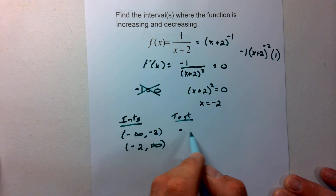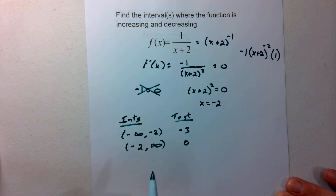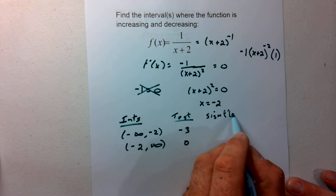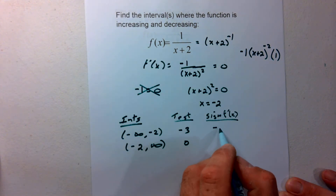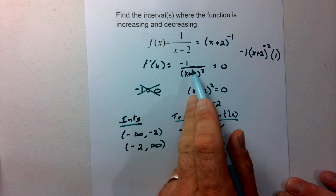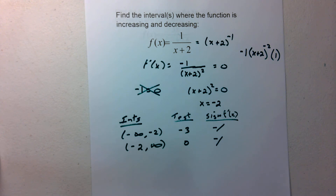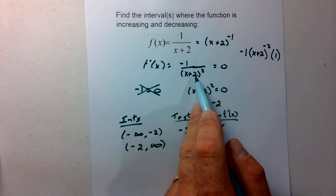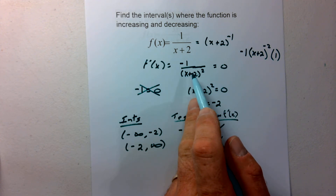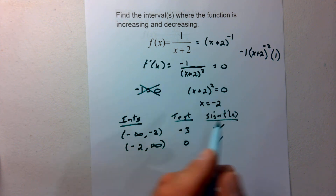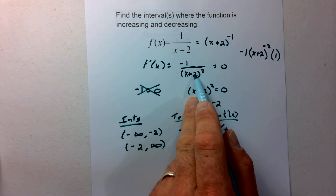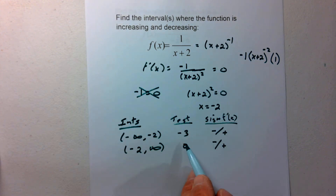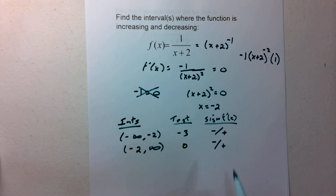I'll test negative 3 in the first interval and 0 in the second. Looking at the sign of f prime of x: the numerator is always negative 1, so I have a negative divided by something. The denominator is a quantity squared, so regardless of what I plug in — positive or negative — squaring it gives a positive value. So I have negative divided by positive for both intervals, meaning the function is decreasing on both.